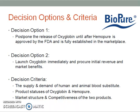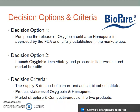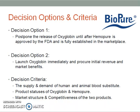In this case analysis presentation, the two options will be addressed in critique under three criteria: the supply and demand of human and animal blood substitutes, the product statuses of Oxyglobin and Humapure, and the market structure and competitiveness of the two products.